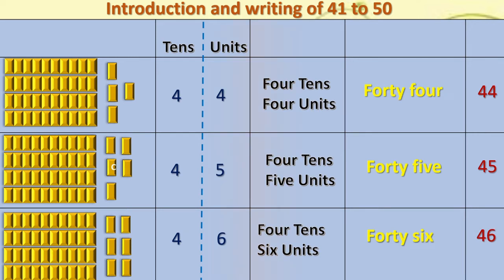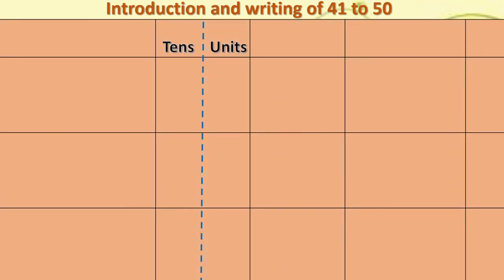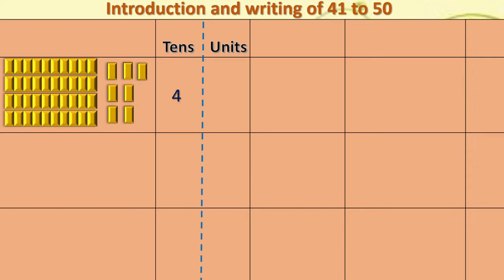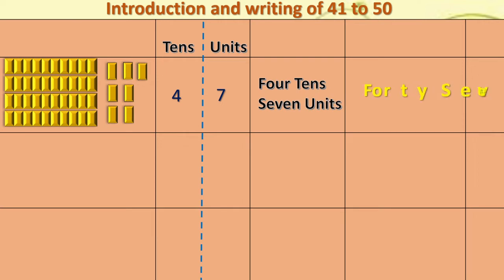Again, we will add 1 more single or unit to 46. That is 4 tens and 7 units. Number formed is 47. That is 40 and 7.